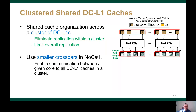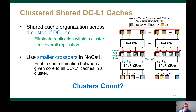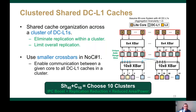Also with this design, we don't need to connect all DCL1s to all L2s. We only need to connect each DCL1 to a subset of L2s that serve the same address range. For example, DCL1-0 and DCL1-36 are connected to L2 slices 0 to 7, as they serve the same address range. Given such a clustered DCL1 design, the question is what is the proper cluster size. Based on our experimentation, we choose 10 clusters, which we call SH40+C10, as it boosts IPC, reduces replication, and reduces network area and power.